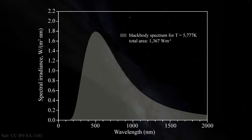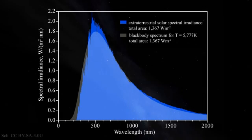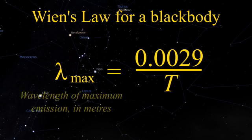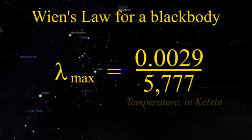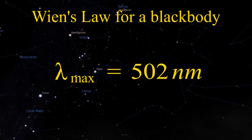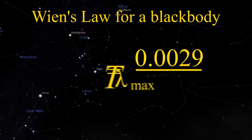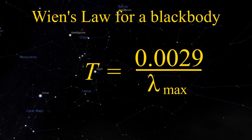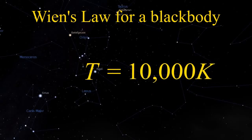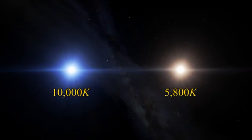Stars behave very nearly like black bodies. Here's the black body curve for a temperature of 5777 Kelvin, and here's the spectrum of light emitted by the Sun as measured above Earth's atmosphere. Using Wien's law we can calculate the wavelength of maximum emission for a black body at a given temperature. For 5777 Kelvin we get 502 nanometers. We can use the same law in reverse to determine the surface temperature of stars. Sirius, the brightest star in the sky, emits most of its radiation at 290 nanometers, indicating a surface temperature of around 10,000 Kelvin — which is why stars like Sirius appear blue-white rather than yellow-white like our Sun.